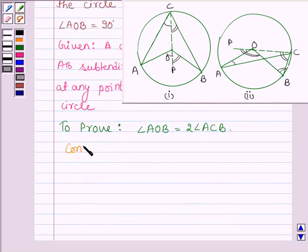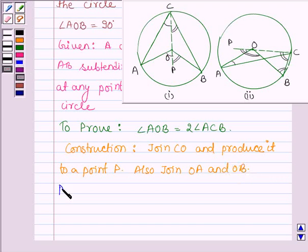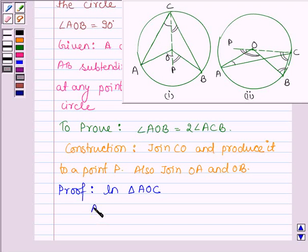Construction: join CO and produce it to a point P. Also join OA and OB. Now let us start with the proof for both cases. Here, we have triangle AOC. We note that AO is equal to CO, since both are radii of the circle.